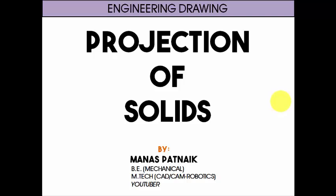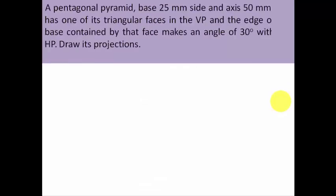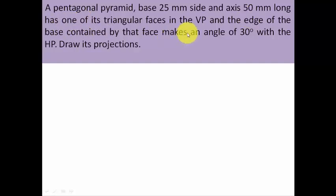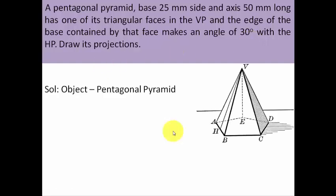Hey guys, this is your friend and tutor Manas Patnak, and this time around we'll be taking on a pentagonal pyramid. Let's get started with the problem: a pentagonal pyramid with base 25 mm side and axis 50 mm long has one of its triangular faces in the VP, and the edge of the base contained by that face makes an angle of 30 degrees with the HP. Draw its projection.